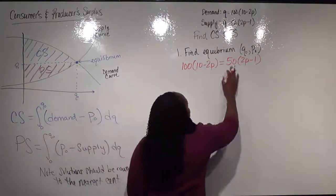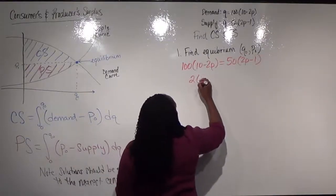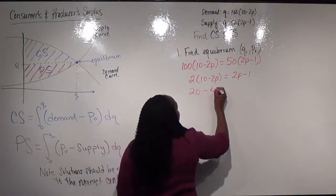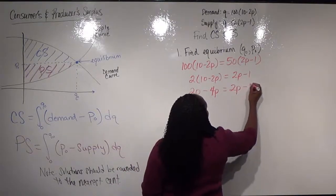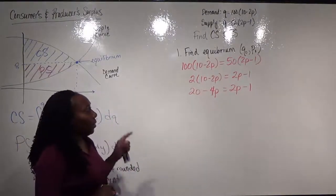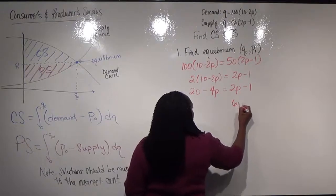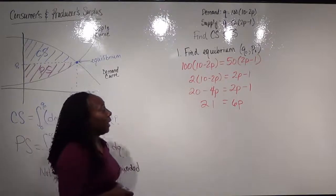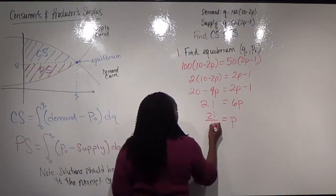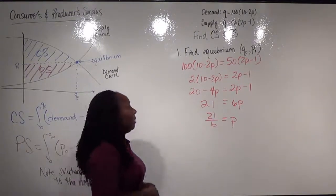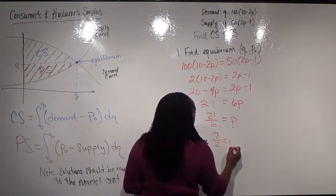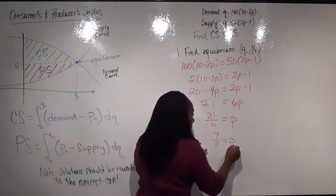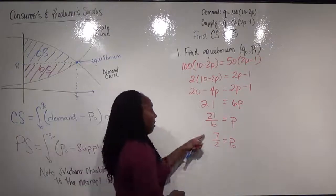I'm just going to solve. Here I can divide out by 50 and I get 2(10 − 2p) = 2p − 1, multiplying through. I'm going to make my p's positive, so I'll move the 4p to this side and the 1 to the other side, then divide out by 6. So p will equal 7/2. This is essentially p-naught, the equilibrium price — so three and a half dollars.